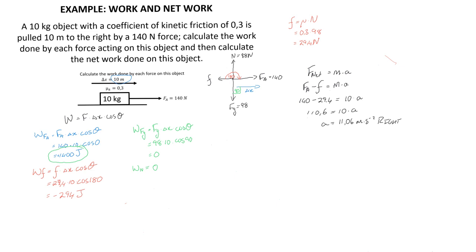The energy added is clearly in the form of kinetic energy, because the object is accelerating and its velocity is changing. We can calculate the net work done on this object using the net force multiplied by the displacement multiplied by the cosine of the angle between them. The net force is 110.6 newtons, the displacement is 10 meters, and since they are in the same direction the angle is 0°, giving us a net work of 1106 joules.